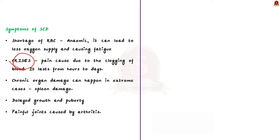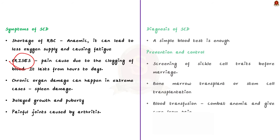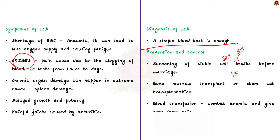A simple basic blood test is enough to diagnose the disease. Currently, all states in India have screening programs to identify the disease as early as possible. For prevention, identifying persons with sickle cell trait is key — if two individuals with sickle cell trait marry each other, there is a high possibility their child will have sickle cell disease. By screening individuals with sickle cell trait before marriage, the spread of the disease can be prevented.